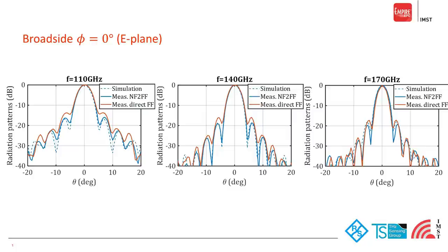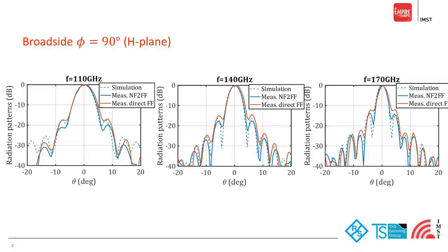The normalized 2D cuts of the E-plane within an elevation range from minus 20 to plus 20 degrees show very good agreement, especially at the peak point with less than 0.1 dB difference. The comparison is done between the simulation data from Empire, the direct measurement, and the near-field to far-field post-processed result.